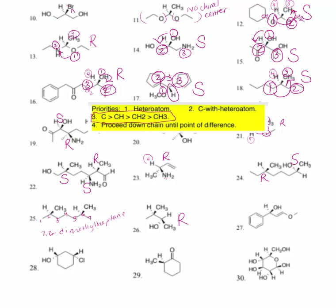For number twenty-seven, following the same rules: OH is number one, and four is assigned to the hydrogen to the rear. This carbon does not have any hydrogens, but this one does. So this side is going to be priority number two — greater than the other side. With hydrogen to the rear, I am rotating counterclockwise. This is an S configuration.